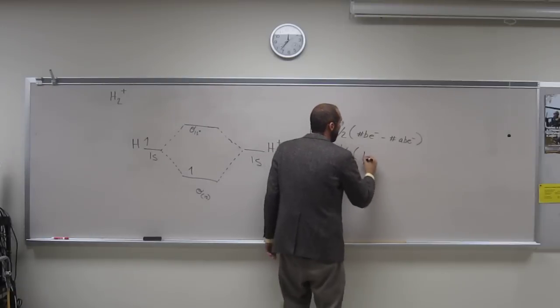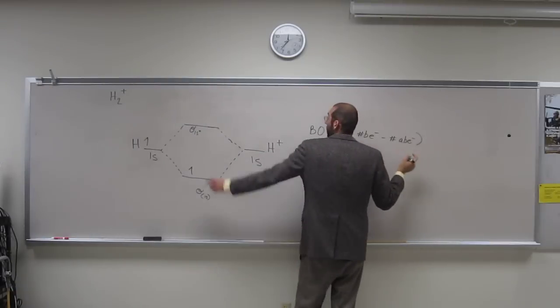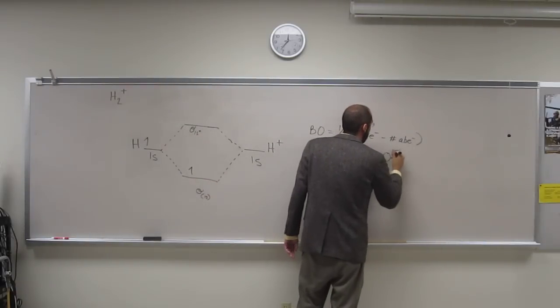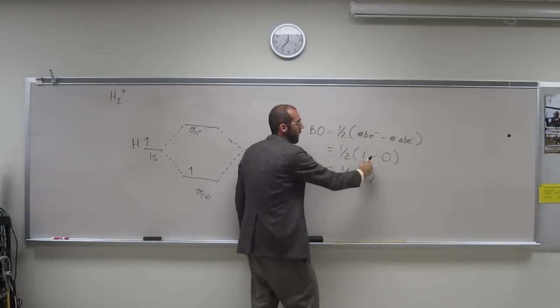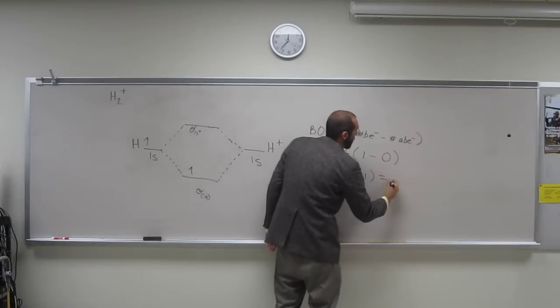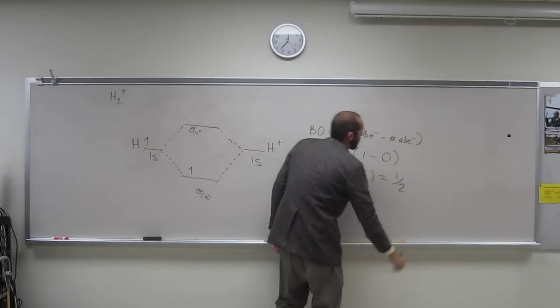So the number of bonding electrons is one, minus the anti-bonding electrons is zero. So one-half times one, right? One minus zero is one, so that equals one-half.